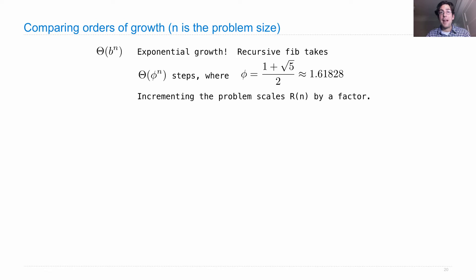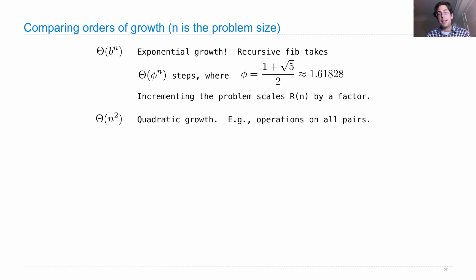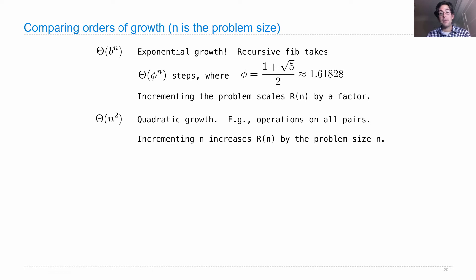These things grow very fast. Quadratic growth, or theta n squared, means that you're doing some operation on all pairs of things. Incrementing n increases the resources by the problem size itself, and that's fairly expensive. But there are lots of order n squared algorithms in the world. We'll look at some of them throughout the course.